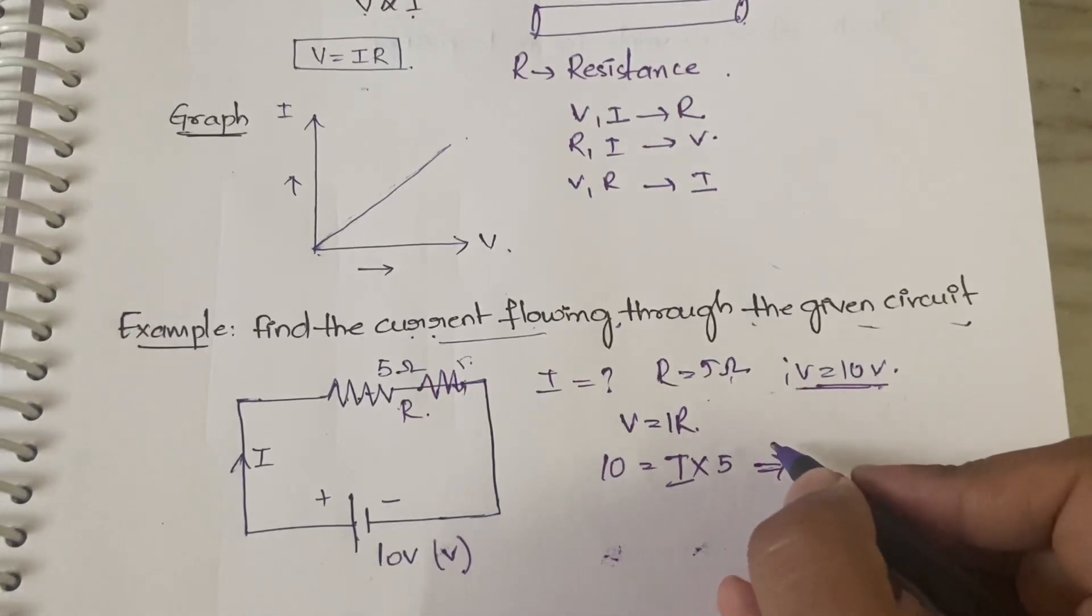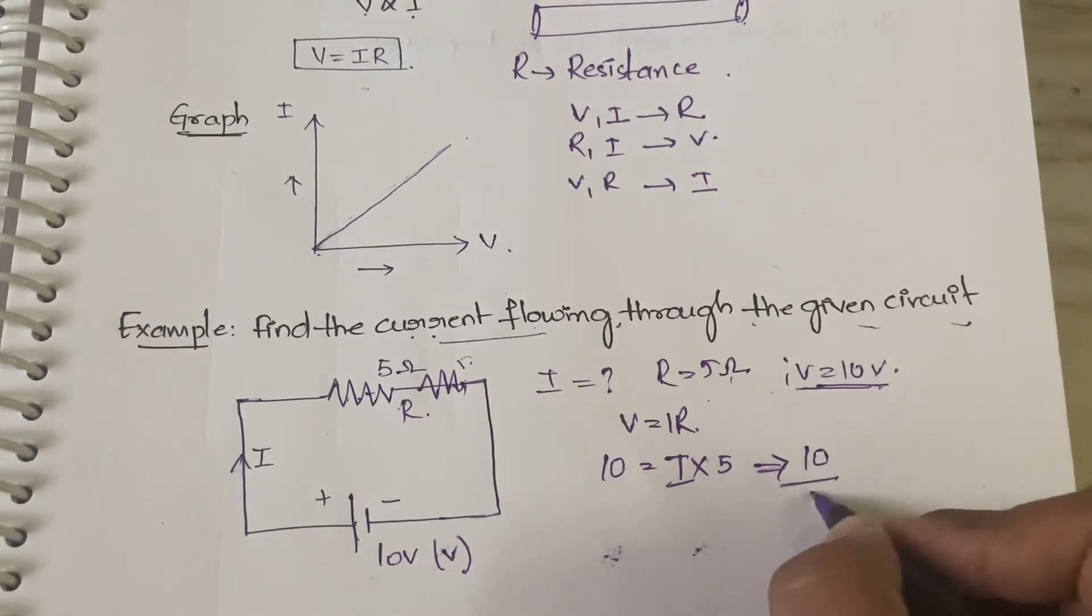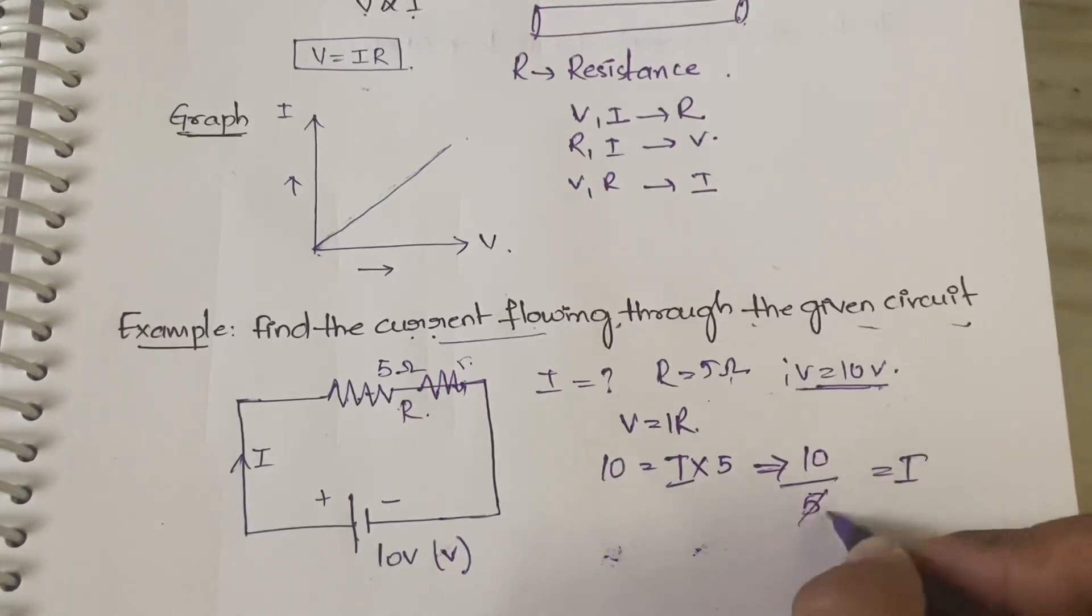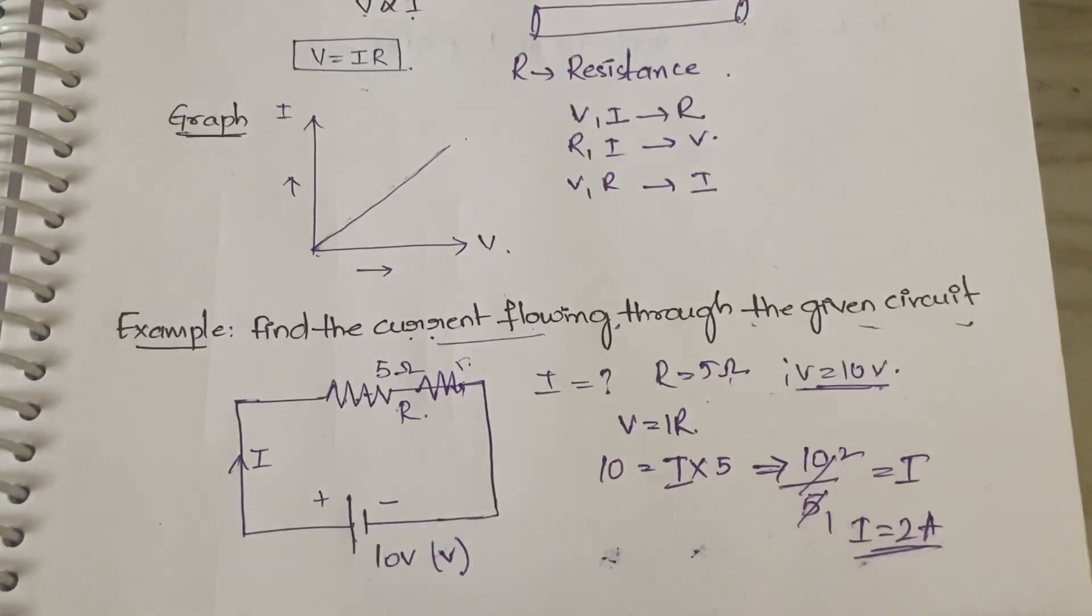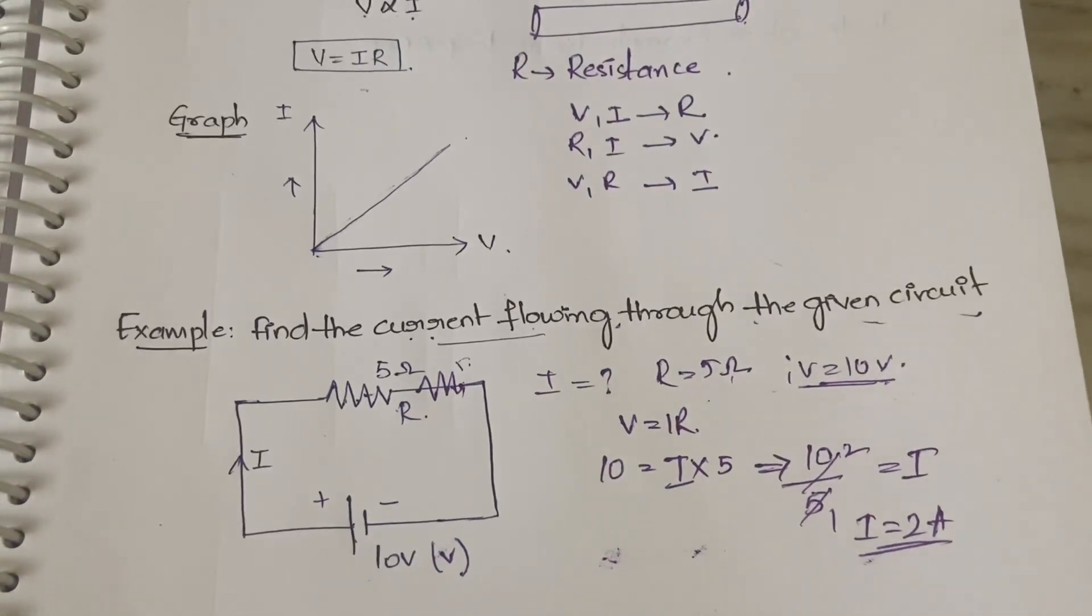Which means, if you send this 5 to this side, 10 by 5 is equal to I. 5 twos are 10, so I is equal to 2 amps. What is the unit of current? It is ampere. That is why 2 amps. This is how Ohm's Law is applied.